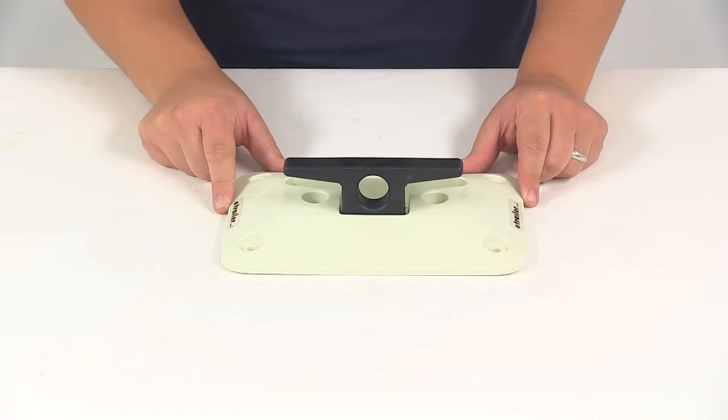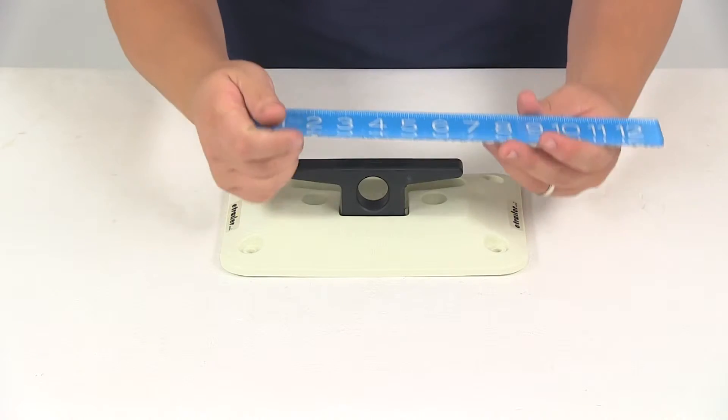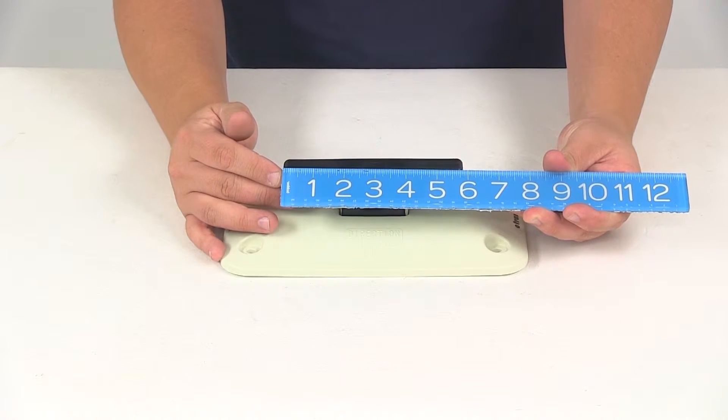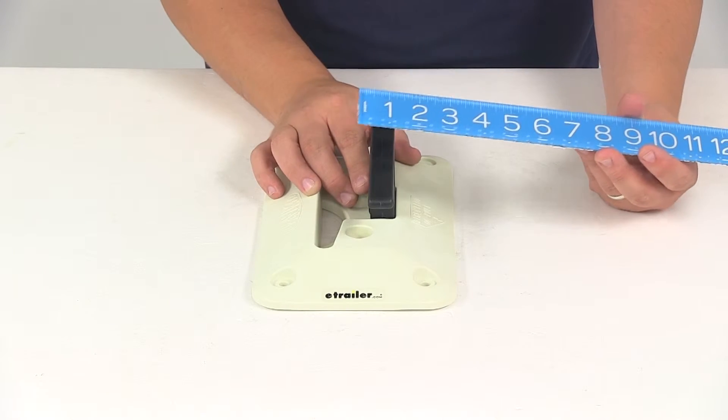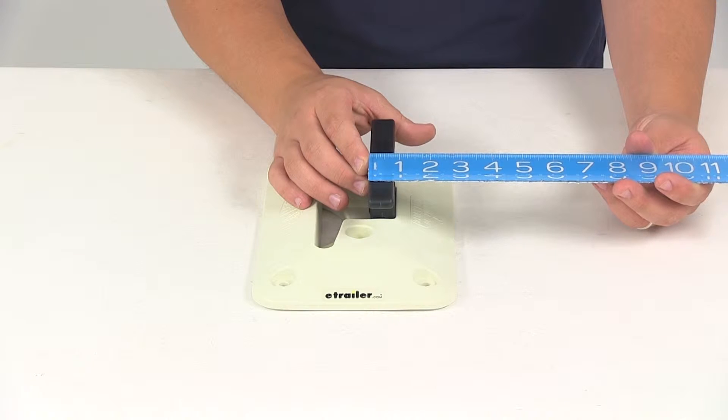If we take a measurement of the actual cleat, it's going to give us a measurement going this direction of about five and seven eighths of an inch. The width of just the cleat is going to measure about seven eighths of an inch wide.